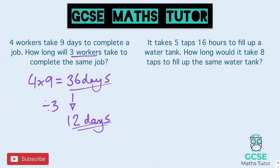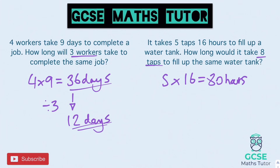Second practice question: it takes five taps 16 hours. One tap would take five times longer — five times 16 is 80 hours. How long would it take eight taps? Divide 80 by eight because it's going to be eight times faster, and that leaves us with 10 hours.